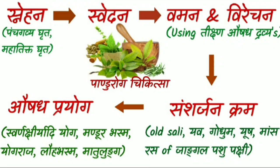Then advise Samsarjanakrama — a graduated diet which includes old Shali, Yava, Goduma, Yusha, and Mamsarasa of Jangala and Pakshi. After Samsarjanakrama, Panduruga-Nashaka Aushadha Yogas such as Swarnakshiri Radi Yoga, Mandura Bhasma, Yoga Raja, Loha Bhasma, and Mathulunga are to be given considering the Dosha vitiation.